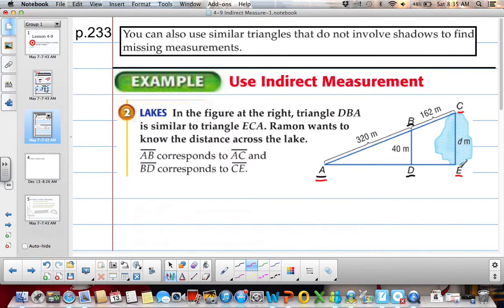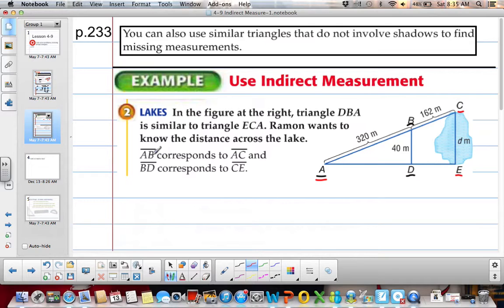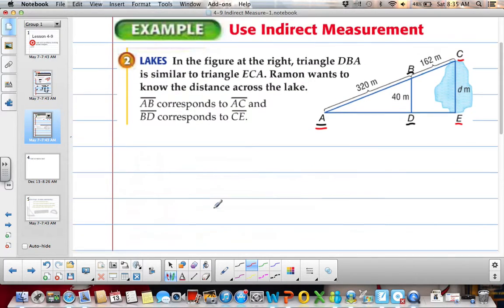So this triangle is similar to this big triangle. We want to know the distance across the lake, which is this right here. So if we find AB and AC, we know that AB is going to correspond to AC, and BD corresponds to CE, which is our lake. So we can set that up.